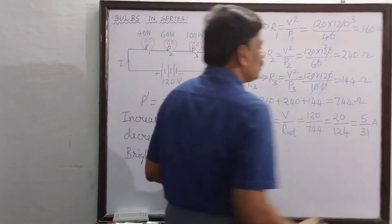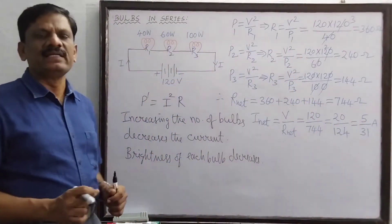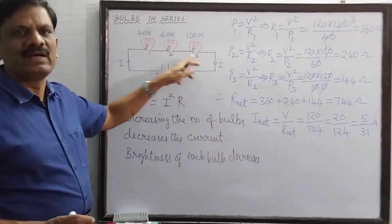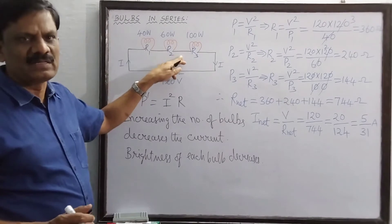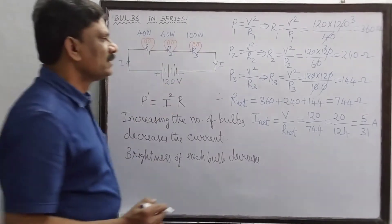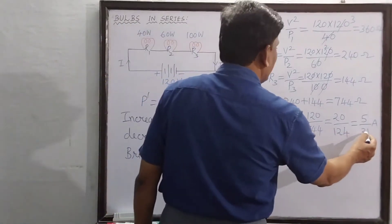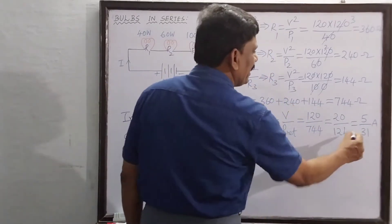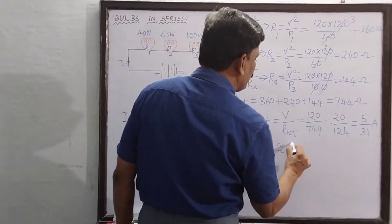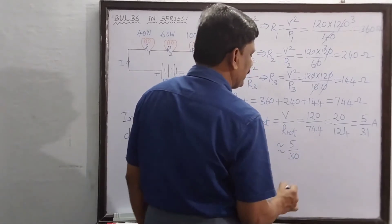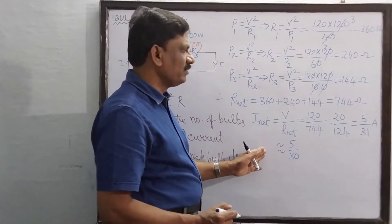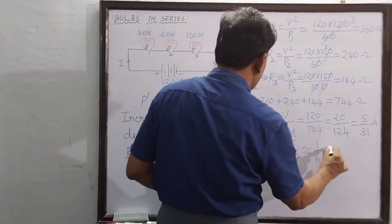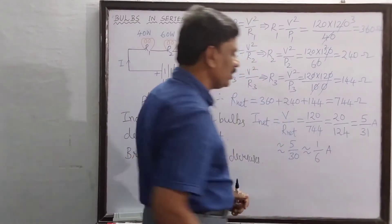Now we need to find the power dissipated by each bulb. The net current I ≈ 5/30, which we can take as approximately equal to 1/6 ampere. So the net current is approximately 1/6 ampere.